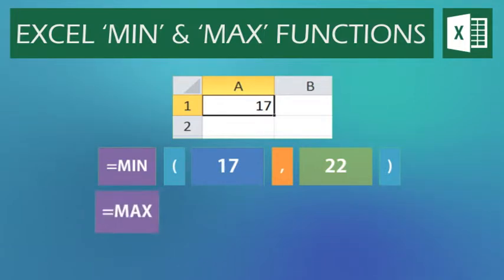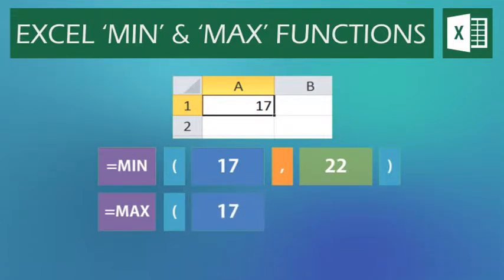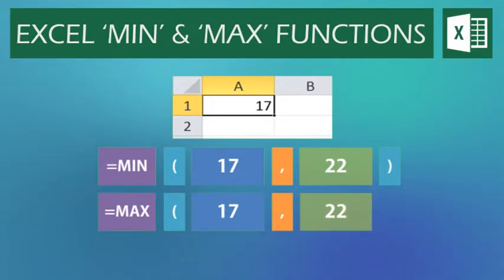We start with equals MAX, then open brackets. Then our first value, in this case 17. A comma to move on to the next part. And then our second value, in this case 22. We then close the brackets to finish the formula.